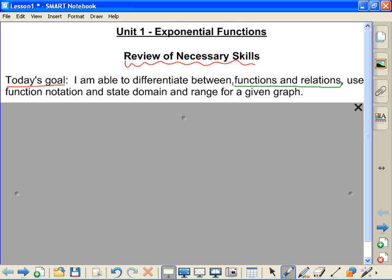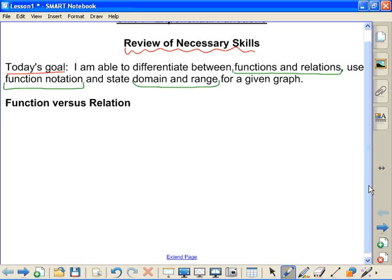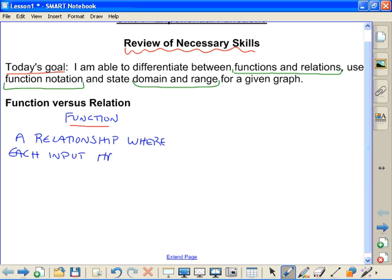We're going to talk about functions versus relations, what that is. Then I'm going to review function notation, and then we're going to review domain and range. So those are what our major focus is today. Very quickly, going through function versus relations, so this goes back to grade 9 and 10. So our function, I'm going to keep it in simple terms here. A relationship where each input has only one output.